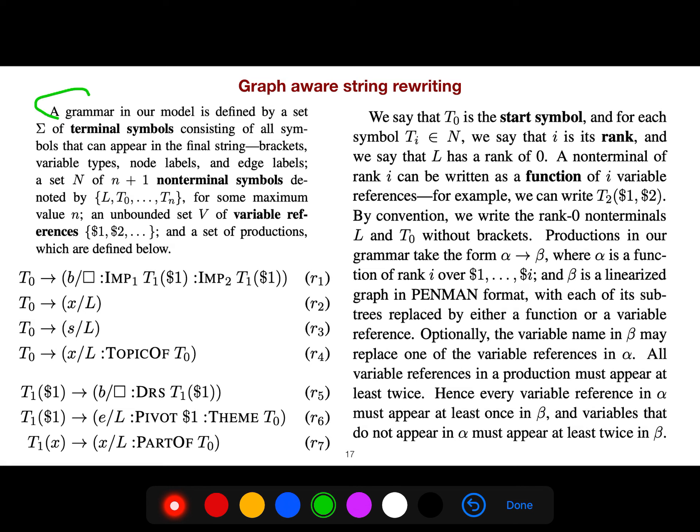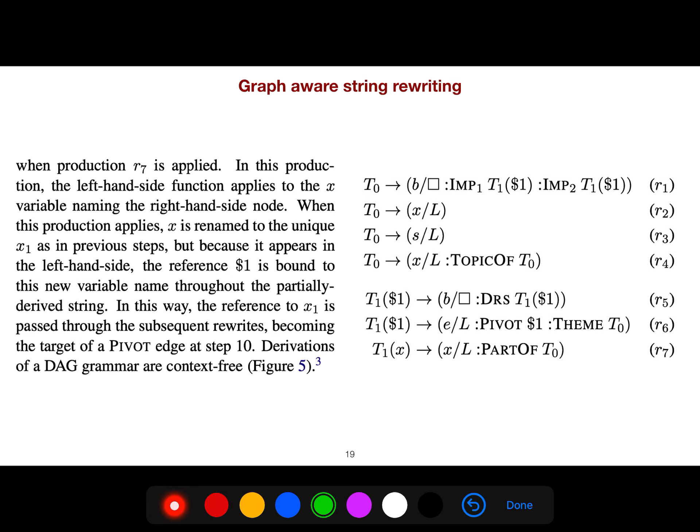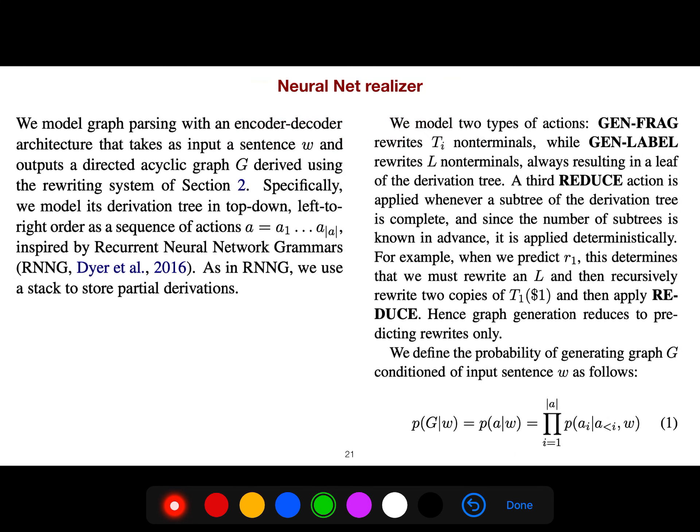Just like any other grammar, we define a set of terminal symbols and also non-terminal symbols. These are production rules. For example, T0 becomes this, linearizing different parts of that box I showed you at the beginning. We say T0 is the start symbol, I is its rank, and L has rank 0. I hope you are familiar with discourse representation structure. These are just production rules.